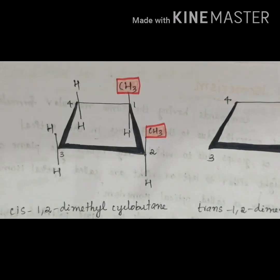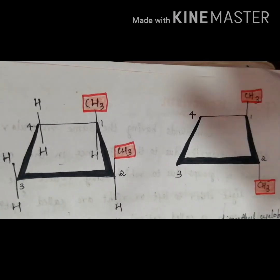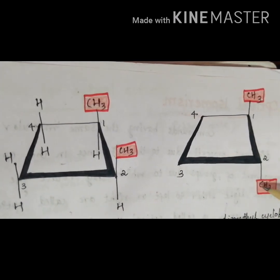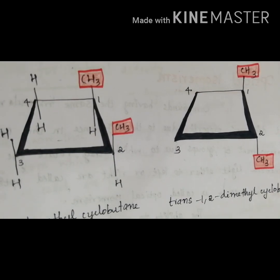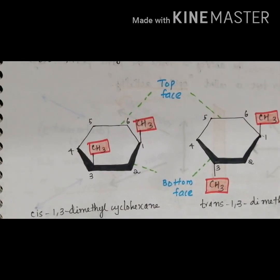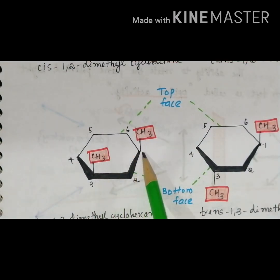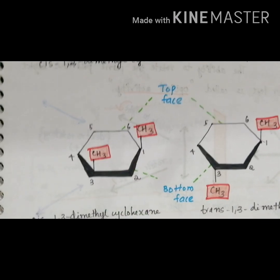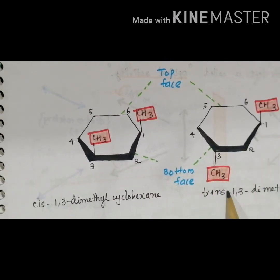Similarly, we can write the trans isomer of cyclobutane, in which one CH3 is above the plane and one is below the plane — this is called trans-1,2-dimethylcyclobutane. Another example is cyclohexane, where two CH3 groups are on different carbon atoms at positions one and three. When both are on the same face above the plane, it is called cis-1,3-dimethylcyclohexane. When on opposite faces, it is trans-1,3-dimethylcyclohexane.